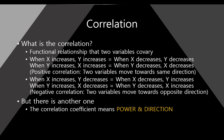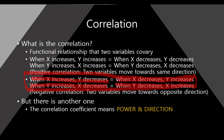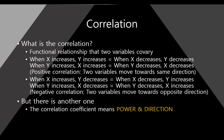Otherwise, if when x increases, y decreases, and when x decreases, y increases — it can be restated as when y increases, x decreases, and when y decreases, x increases. These four sentences are the same in correlation, and we call it negative correlation. Negative correlation means two variables move toward the opposite direction.